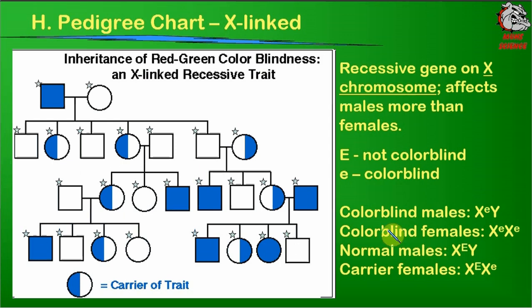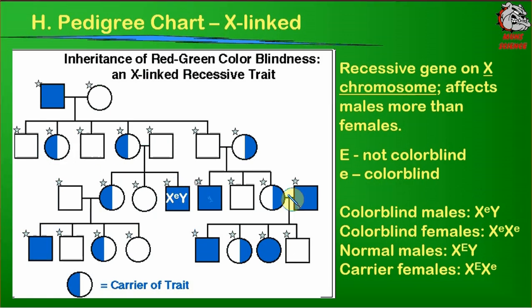When filling out pedigrees, there's a standard way of solving these. You solve for all the colorblind individuals. Colorblind males will be X little e, Y because they have the disease and inherit X and Y chromosomes. Colorblind females will be X little e, X little e because that's the only way they can have colorblindness. In our example, there's one male in the third generation with colorblindness, a total of three in the third generation, two more plus one in the first generation, and a female with colorblindness in the fourth generation.